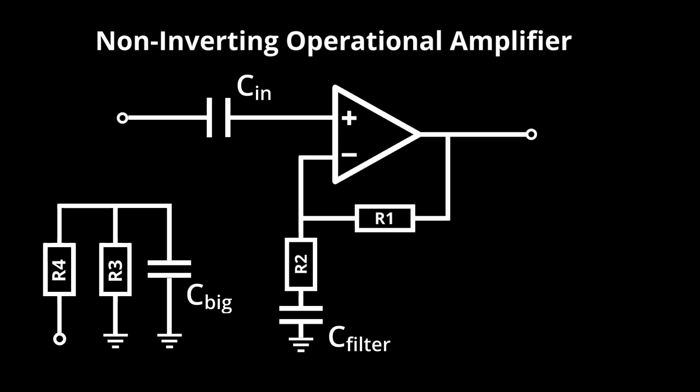The voltage divider is then connected to the non-inverting input of the op amp through a large resistor, biasing the input signal upwards.